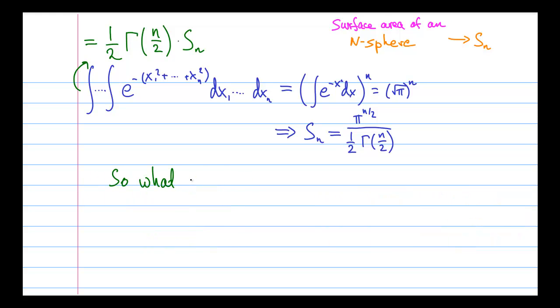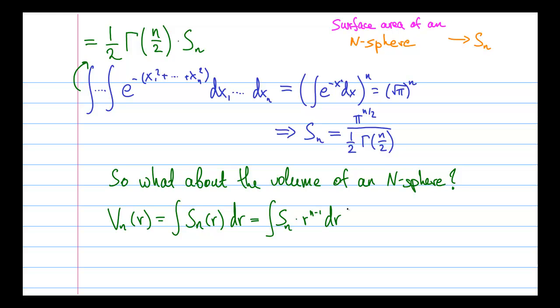So now that we know the area of the unit n-sphere, we can easily compute the volume of the unit n-sphere. And to compute the volume of a sphere, we just need to write down its surface area as a function of the radius and integrate it with respect to r. And it works in any dimension.